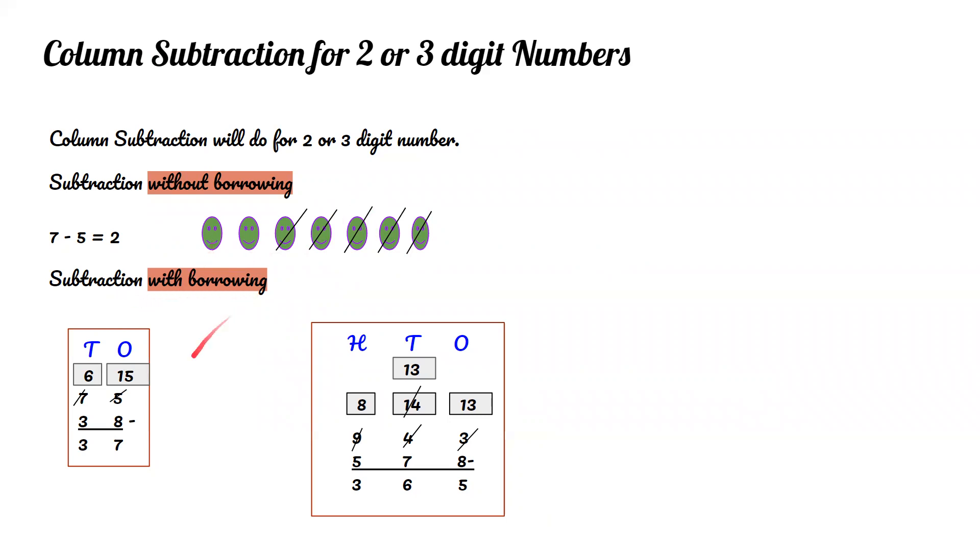Subtraction with borrowing. 75 minus 38. Since the 5 is less than the 8, we use borrowing and make the 7 a 6 and the 5 a 15. 15 minus 8 is 7. 6 minus 3 is 3. So 75 minus 38 equals 37.